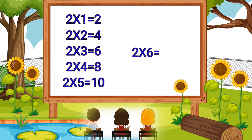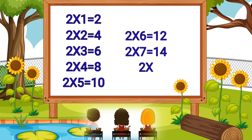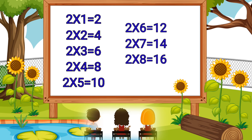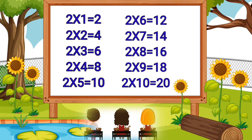Two sixes are twelve. Two sevens are fourteen. Two eights are sixteen. Two nines are eighteen. Two tens are twenty.